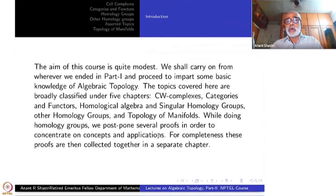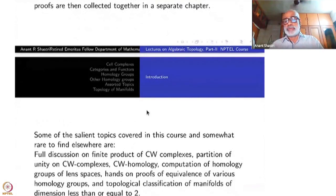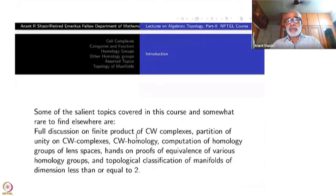For completeness, all these proofs are then collected together in a separate chapter called Assorted Topics. Some of the salient topics covered in this course and somewhat rare to find elsewhere are: full discussion on CW complexes, especially product of CW complexes, partition of unity on CW complexes, CW homology, computation of homology groups of lens spaces, hands-on proof of equivalence of various homology groups, and topological classification of manifolds of dimension less than or equal to two.